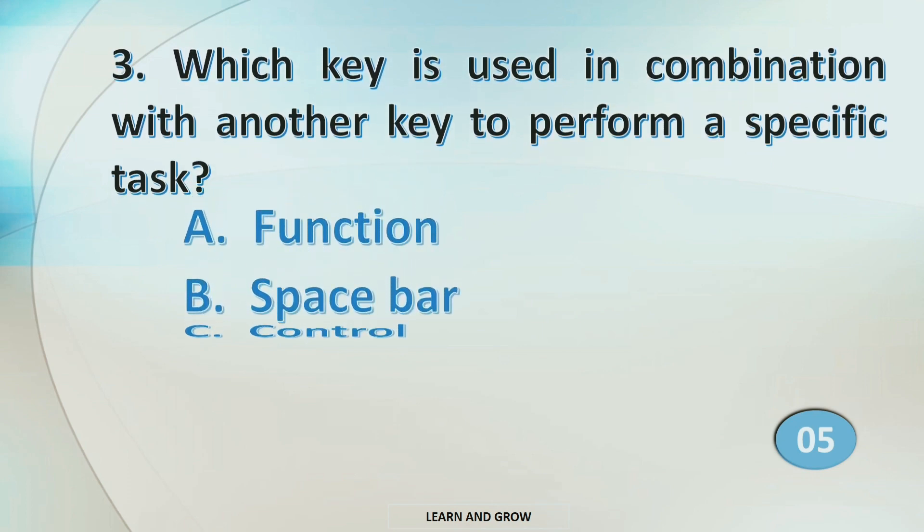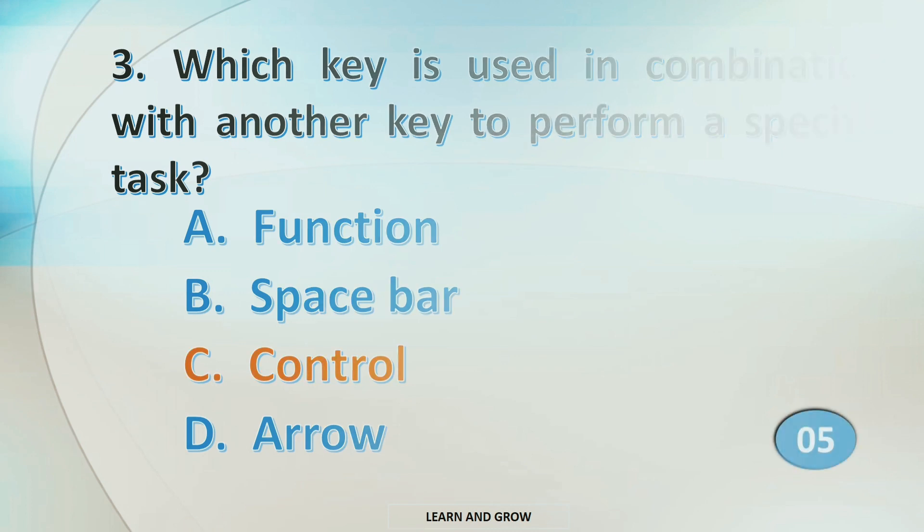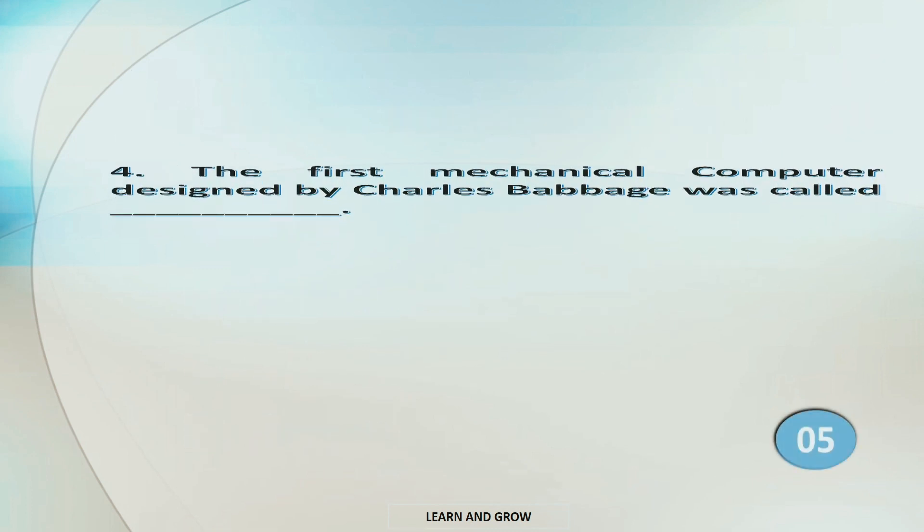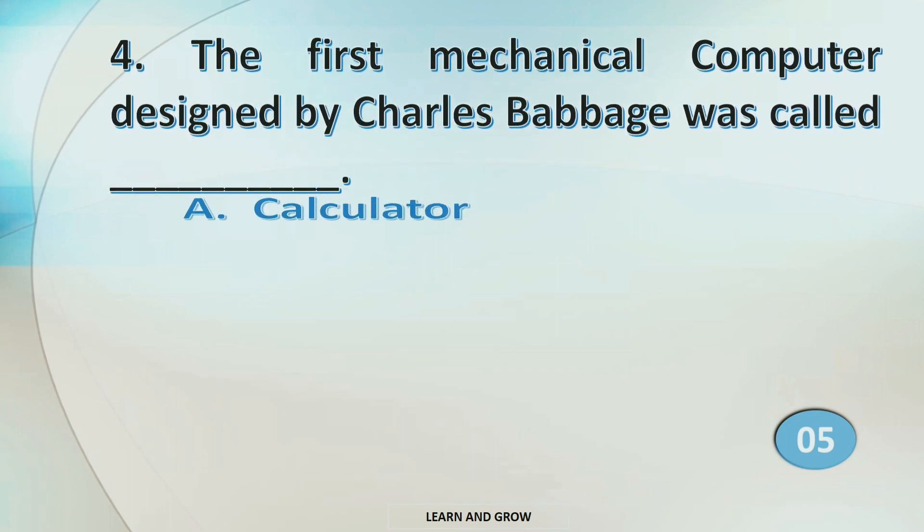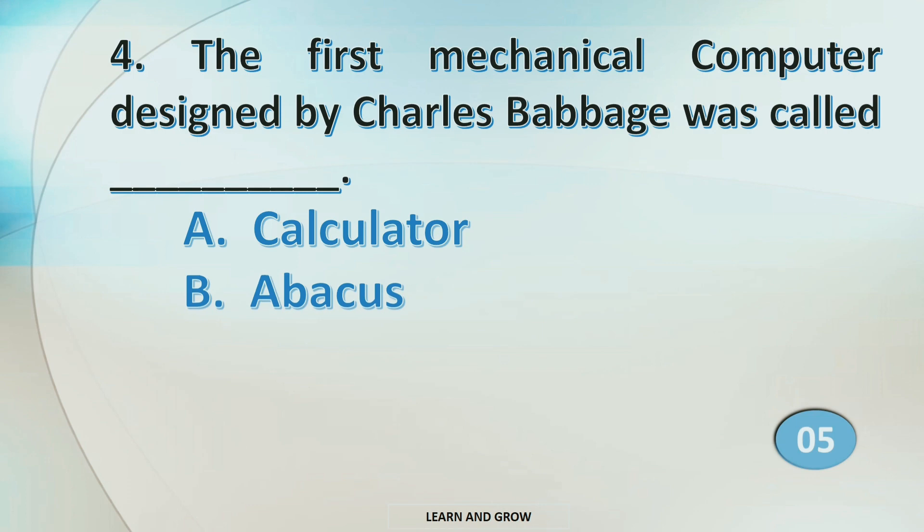The right answer is option C: Control. The first mechanical computer designed by Charles Babbage was called? Option A: Calculator, B: Abacus, C: Processor, or D: Analytical Engine.